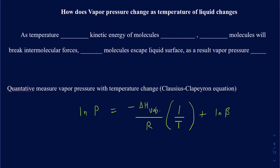In this video, we're going to be talking about how vapor pressure changes as the temperature of the liquid changes. As specified in a previous video, intermolecular forces play an important role in determining the vapor pressure of a particular liquid. If you have molecules bound together with stronger intermolecular forces, you will have low vapor pressure. However, you can break those intermolecular forces by increasing the temperature.